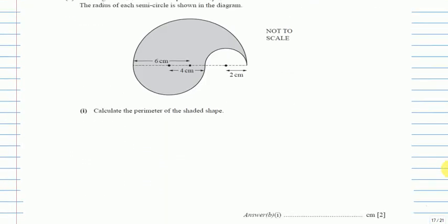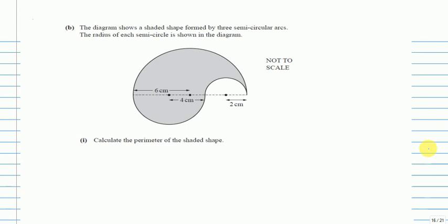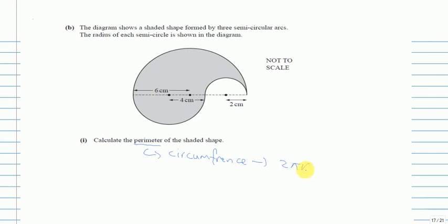Now let's move on to part B. The diagram shows a shaded shape formed by three semicircle arcs. The radius of each semicircle is shown in the diagram. Calculate the perimeter of the shaded shape. Whenever the question involves circles, the perimeter is its circumference. The formula for circumference is 2πr, or it can be written as πd — pi times diameter, or 2π times radius.